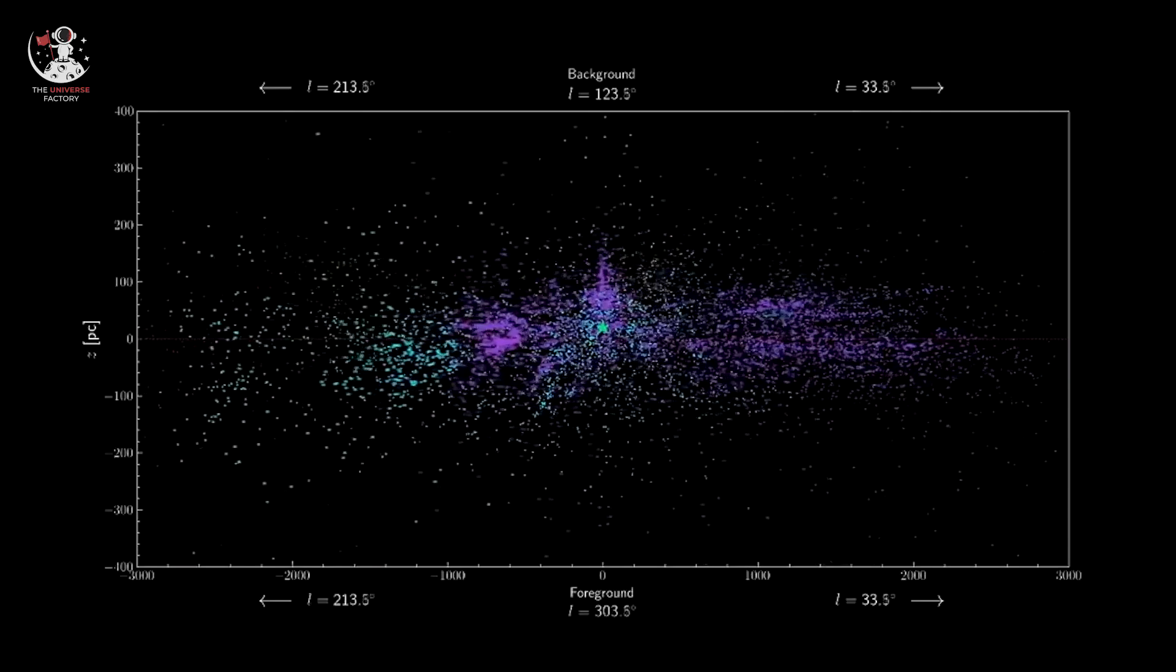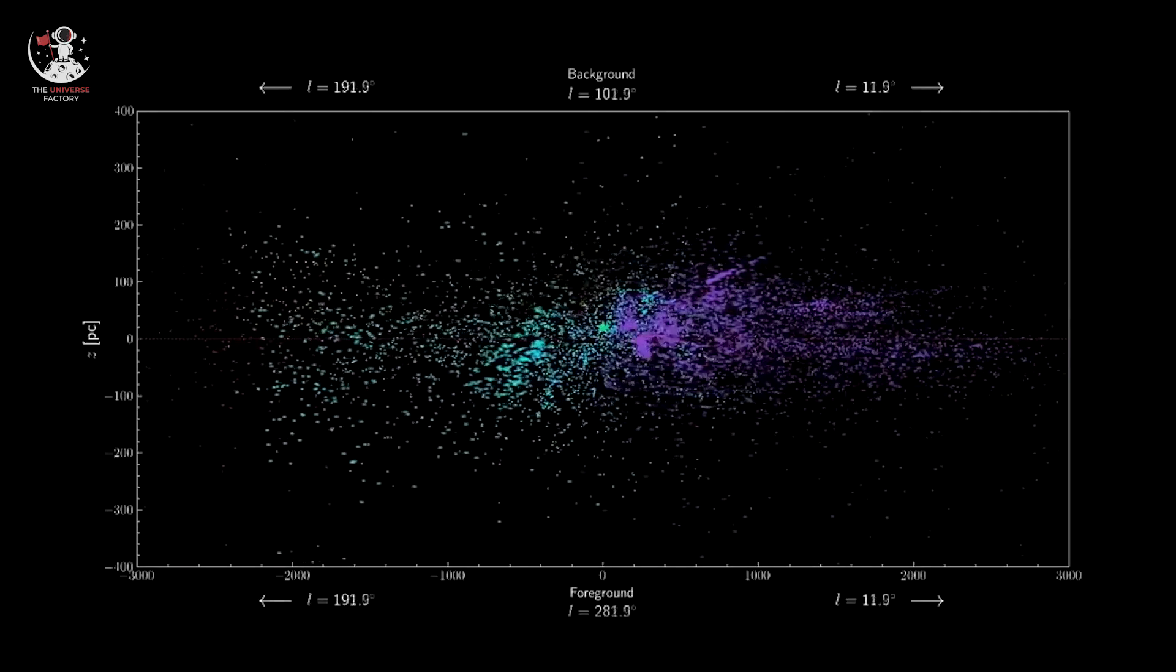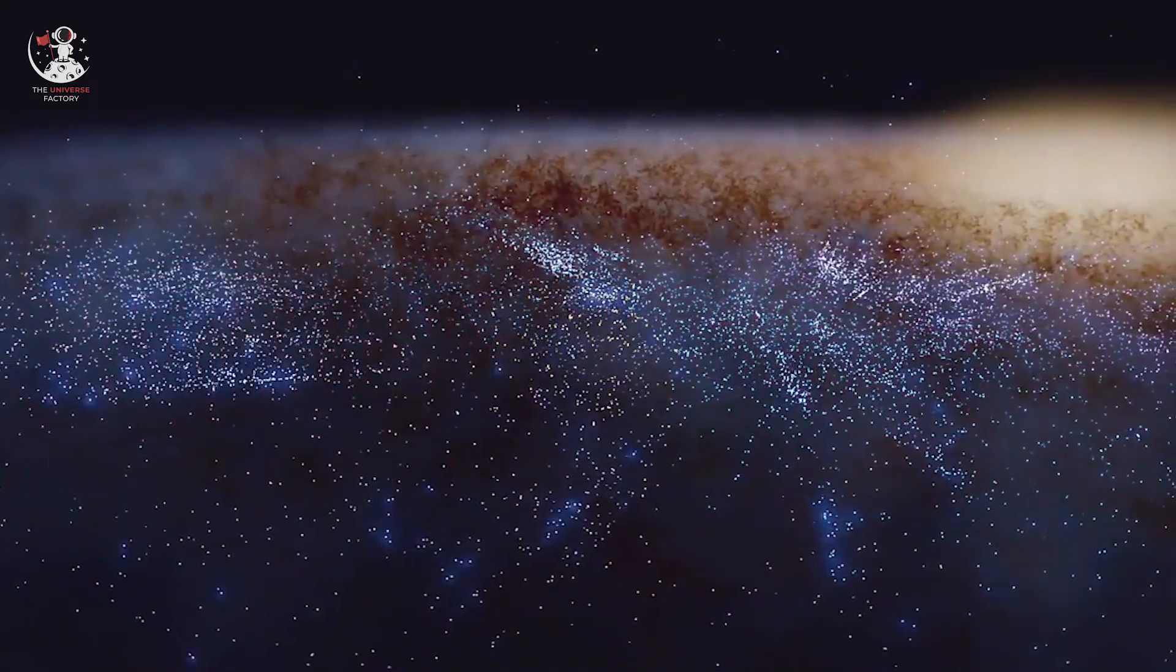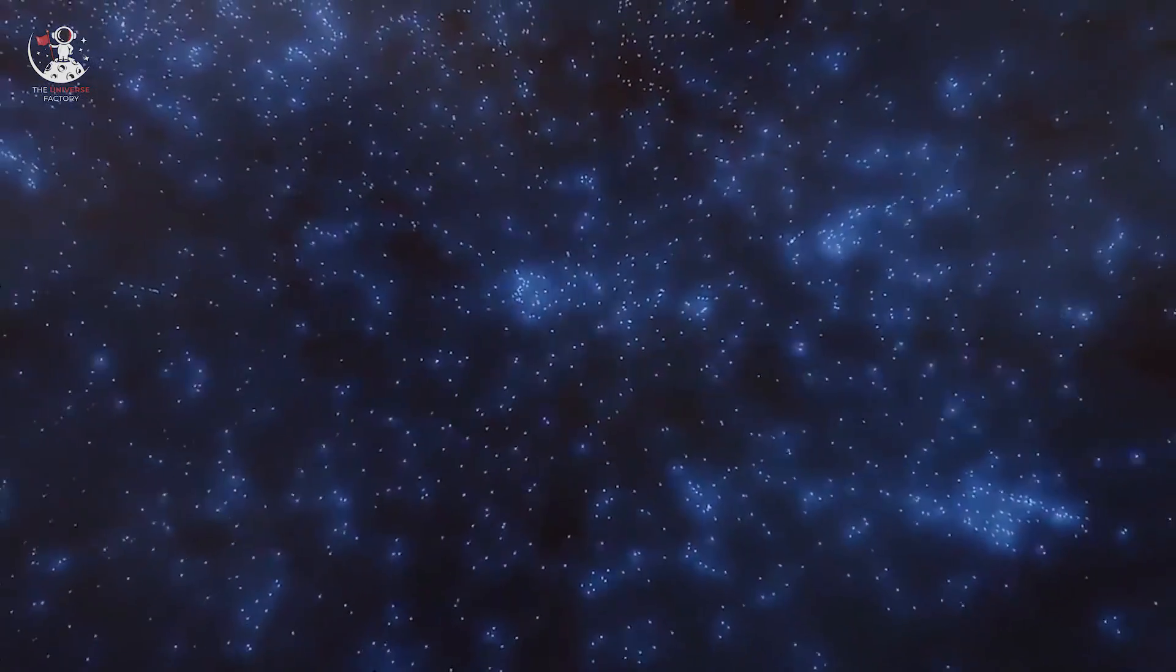Now, this bridge of stars, Cepheus Spur, is full of such hot O and B-type stars. The demise of these stars into supernova explosion is responsible for creating a lot of the heavy elements.